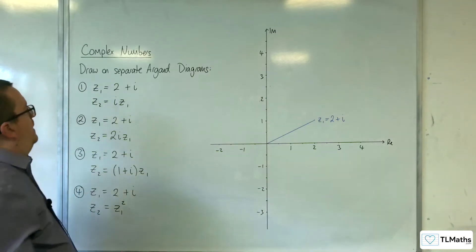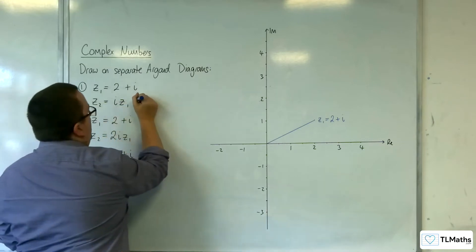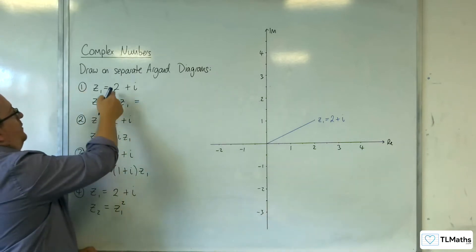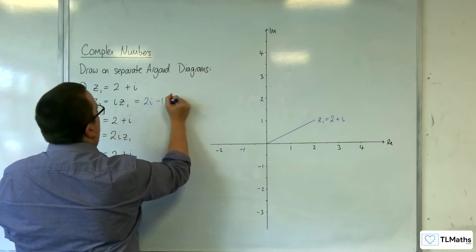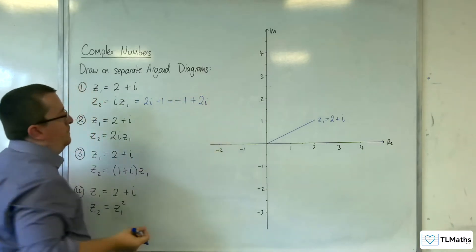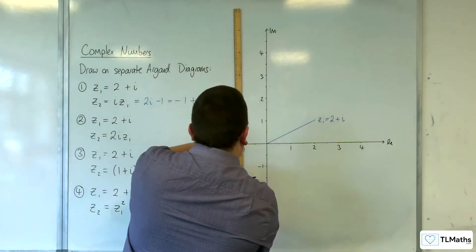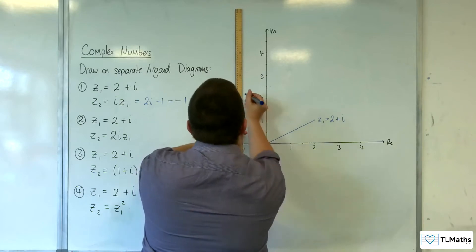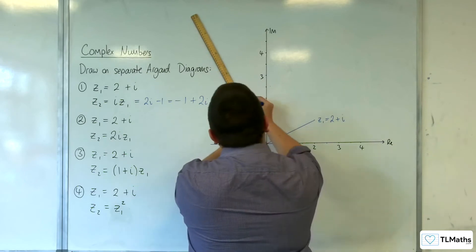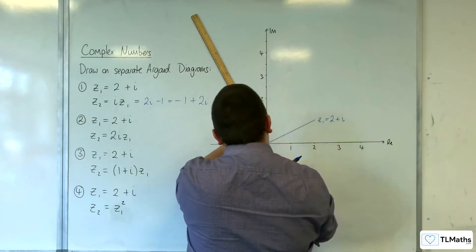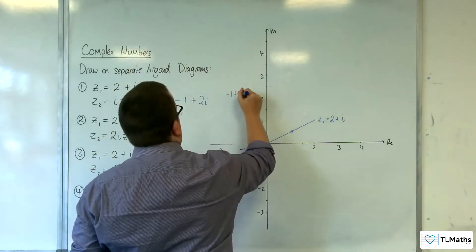Let's see what happens when I multiply 2 plus i times i. So i times z₁: i times 2 is 2i, and then you get i times i, which is minus 1. So we get minus 1 plus 2i.